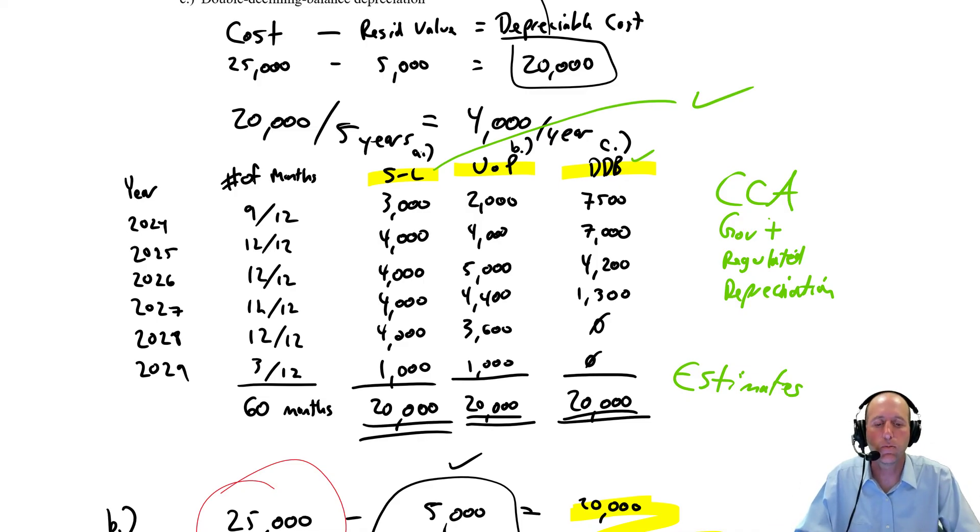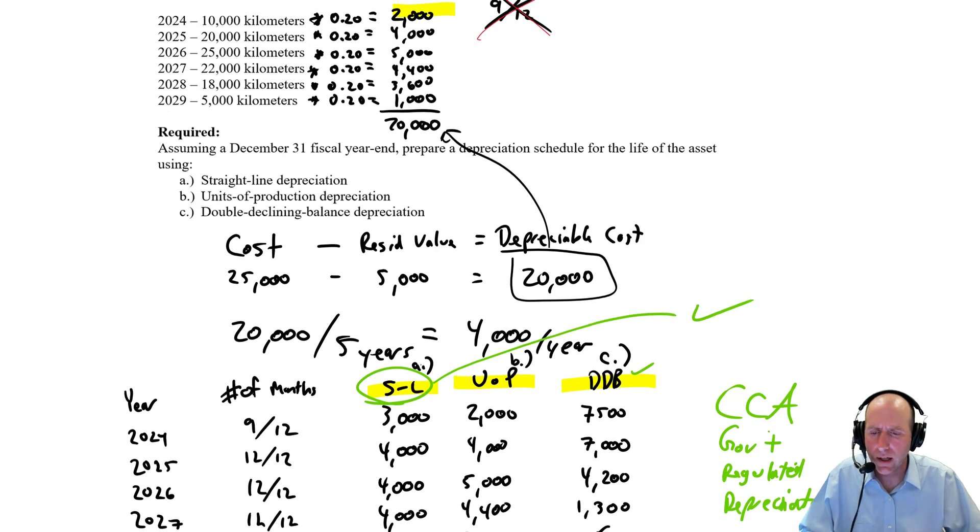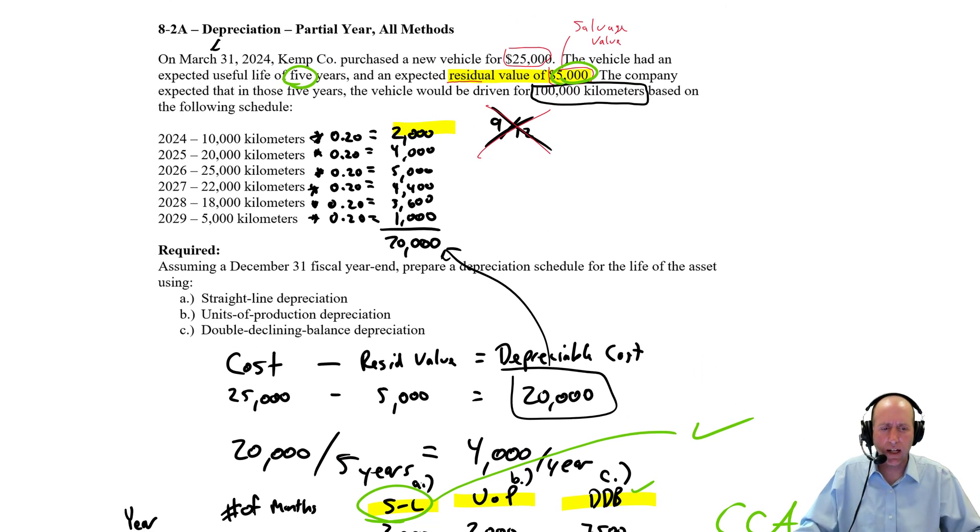That said, companies by and large use straight line the most, and I do agree with that. So again, when I was a student, I liked units of production the most. It made a lot of intuitive sense to me. As a practicing accountant, I don't care for it very much. Okay, there you have it. We've completed A2A. Hopefully you've got the technical understanding and a little bit of background.